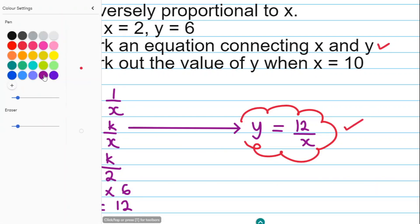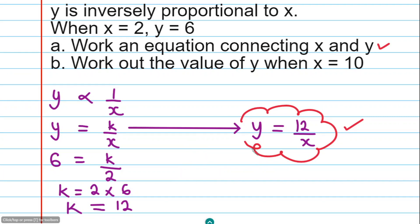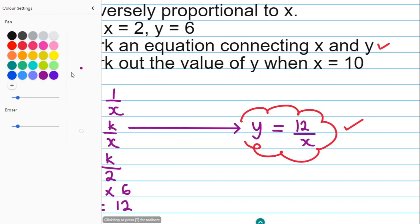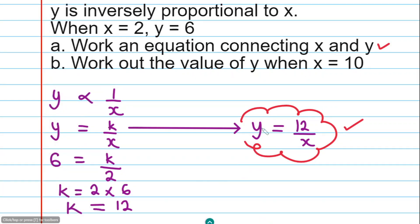Now the second part says we should work out the value of Y when X is 10. And that we can do very easily using this connecting equation. Then I can say Y equals 12 divided by X. But I know that X is 10. So if I work out 12 divided by 10, this is definitely going to give me in decimal 1.2. So the value of Y when X is 10 is 1.2.